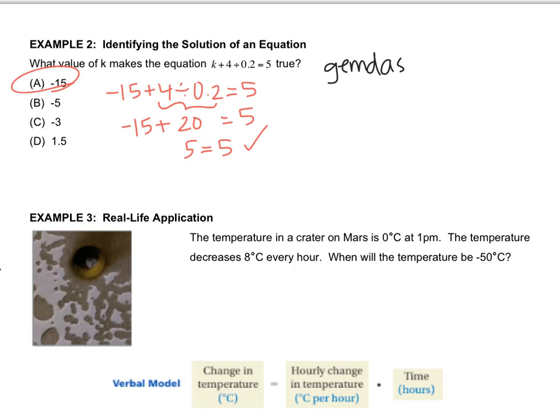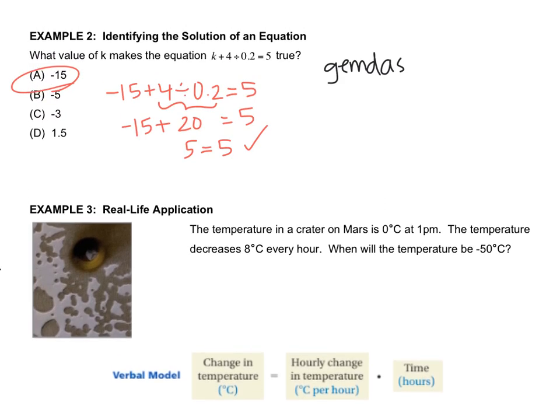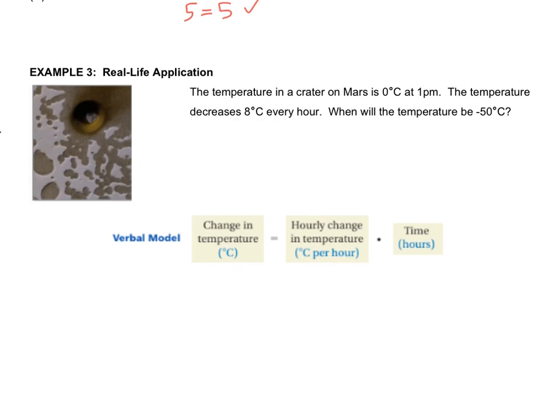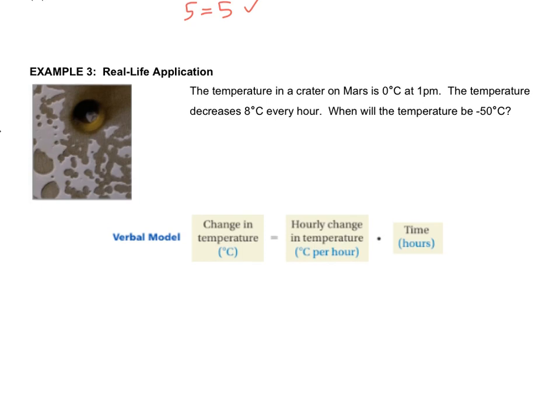All right, when you're ready, let's move on to example three. The temperature in a crater on Mars is 0 degrees Celsius at 1 p.m. The temperature decreases 8 degrees Celsius every hour. When will the temperature be negative 50 degrees Celsius? In the beginning, I'm going to help you set up the equation, set up the verbal model. That's like an equation but with words. So, they tell us the change in temperature is equal to how much it's changing per hour times the number of hours. Like, if it's changing 8 degrees every hour, in one hour, it's 8 degrees. In two hours, it's 16 degrees. In three hours, it's 24 degrees.